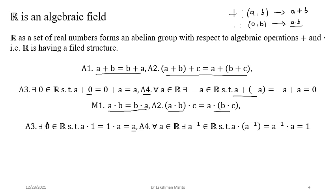Zero does not change the identity of any element with respect to addition, so zero is the additive identity. One does not change the identity with respect to multiplication, so one is the multiplicative identity. The fourth multiplication property: for any non-zero real number a, there exists a multiplicative inverse a⁻¹ such that a · a⁻¹ = 1. For example, the multiplicative inverse of 2 is 1/2; of 3 is 1/3; and of 1 is 1 itself. These form the algebraic structure of ℝ.